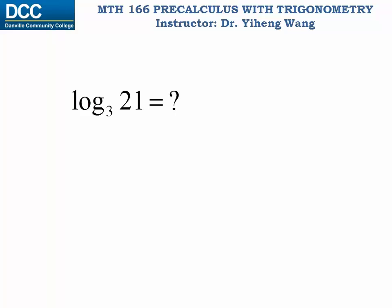Let's say if you want to evaluate log base 3 of 21, how do you find the answer? Well you can certainly try to rewrite this logarithmic expression into its equivalent exponential expression, which is 3 raised to the power of question mark equals to 21. However, that's not very helpful, because even though we can easily tell that 3 to the second power is 9 and 3 to the third power is 27, we really cannot tell 3 raised to what power equals to 21.